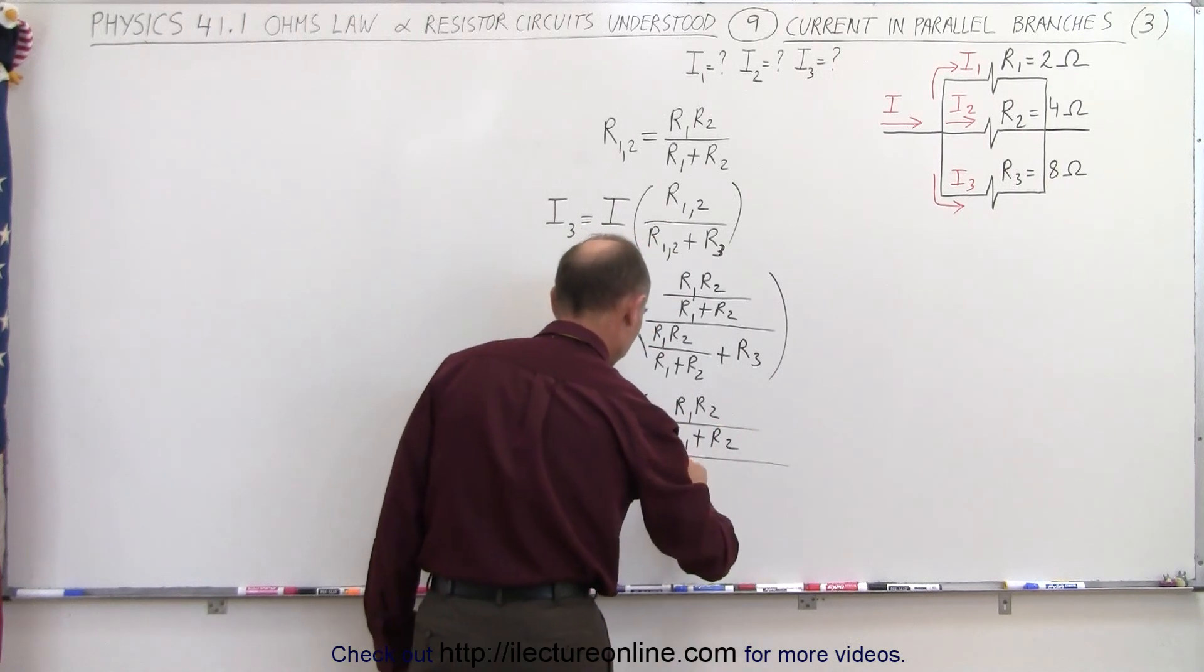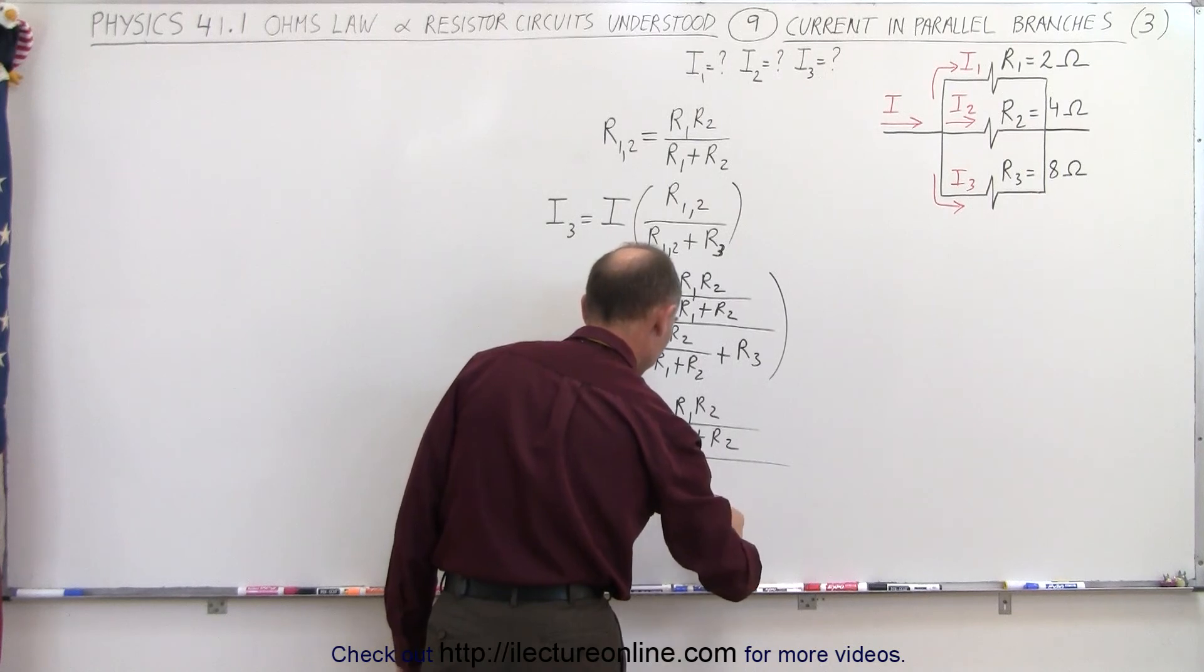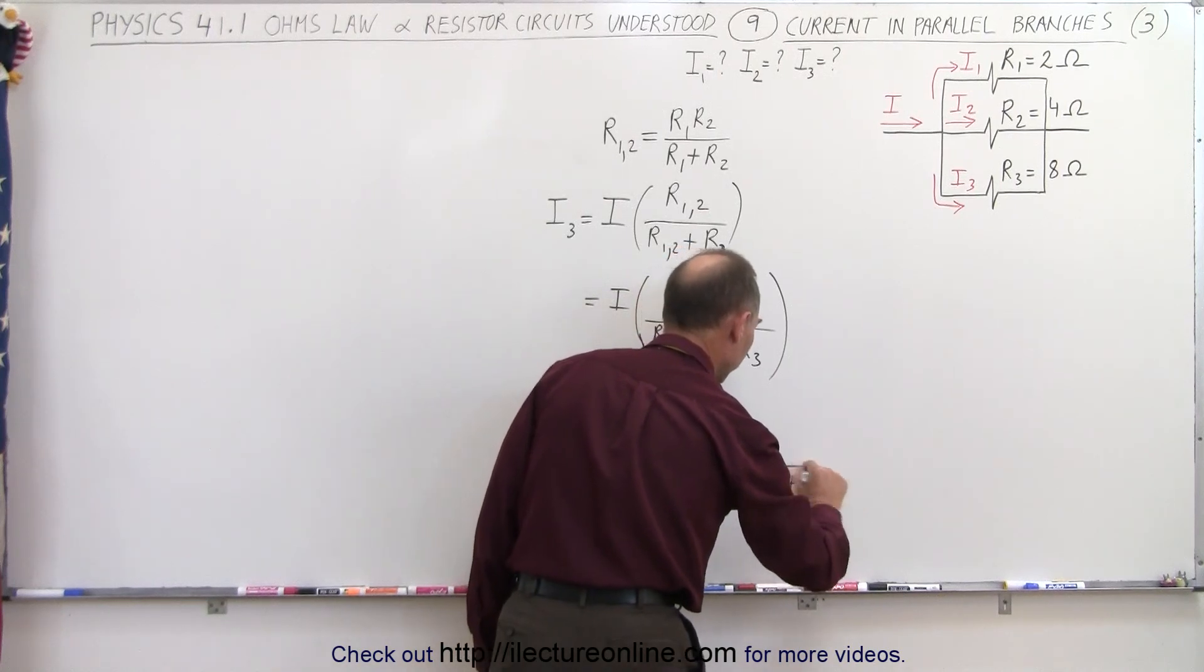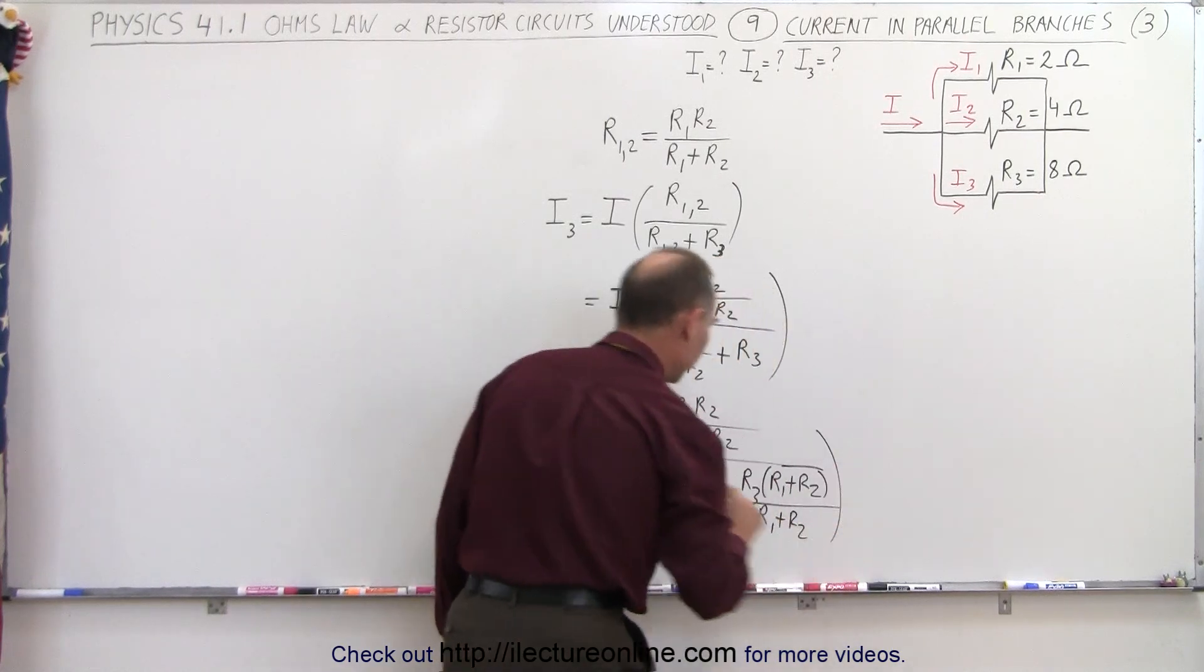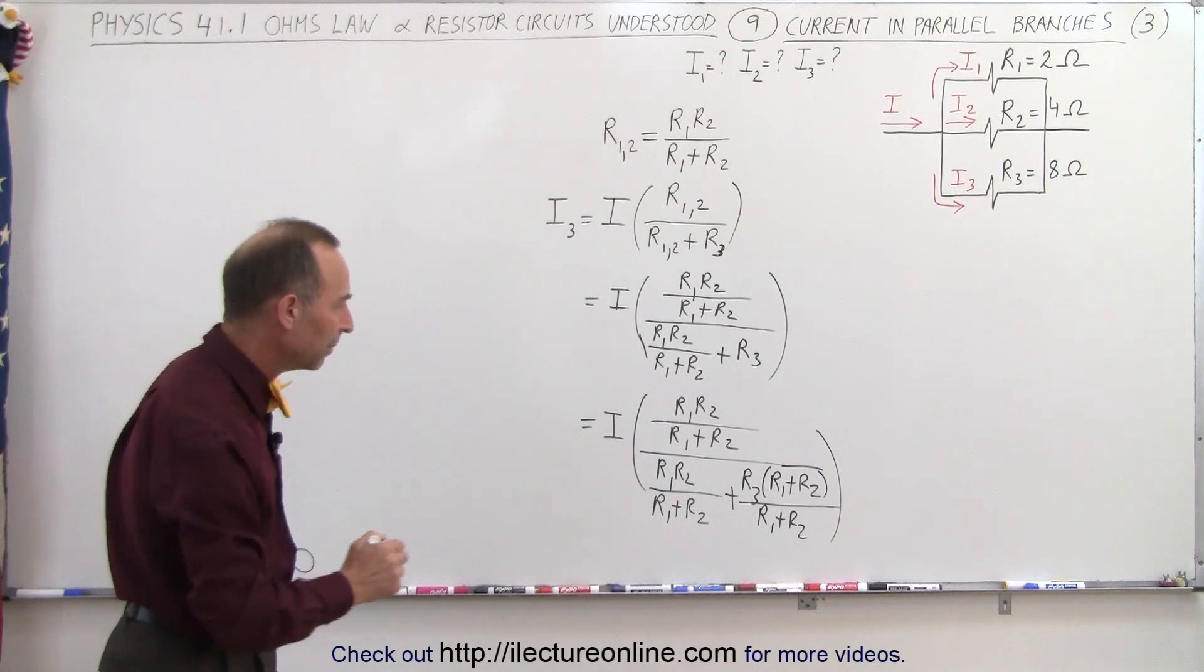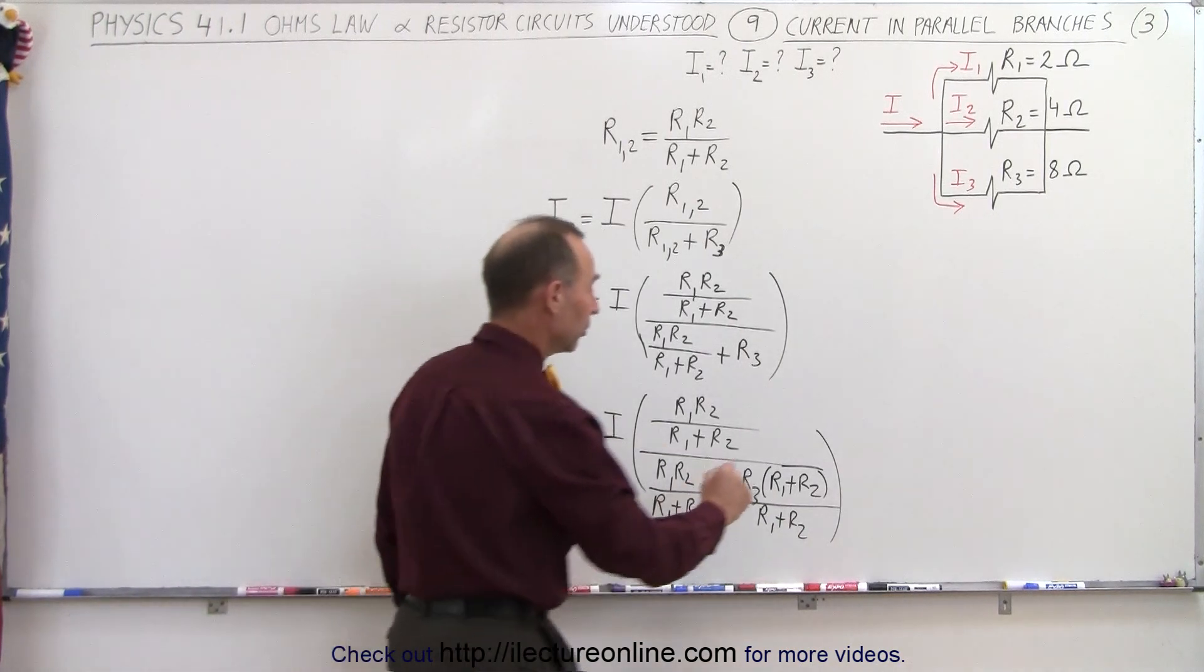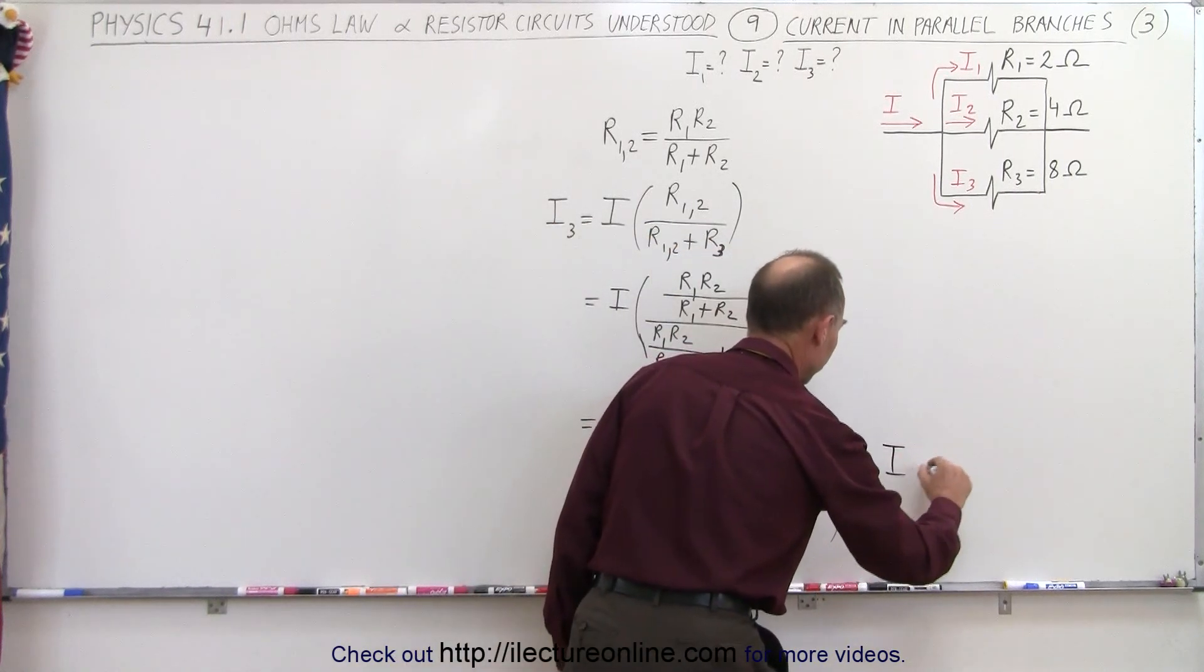And in the denominator, we get R1 R2 over R1 plus R2 plus R3 times R1 plus R2 divided by R1 plus R2. Notice we have R1 plus R2 in every one of the denominators, in the numerator here and in both portions of the denominator, which means we can multiply the top and bottom by R1 plus R2.